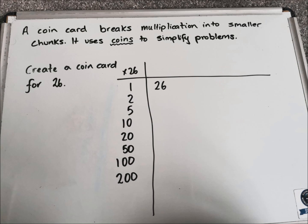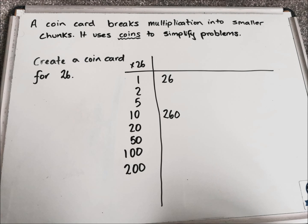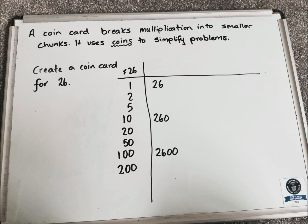We then start filling in the answers to these questions. So what is 26 multiplied by 1? That's nice and simple, it's just 26. So we can write that answer in. We then look at 10 — what's 26 multiplied by 10? It should be nice and simple for us, it's 260. We then look at 100, so what is 26 multiplied by 100? And we should get 2,600 for that one.